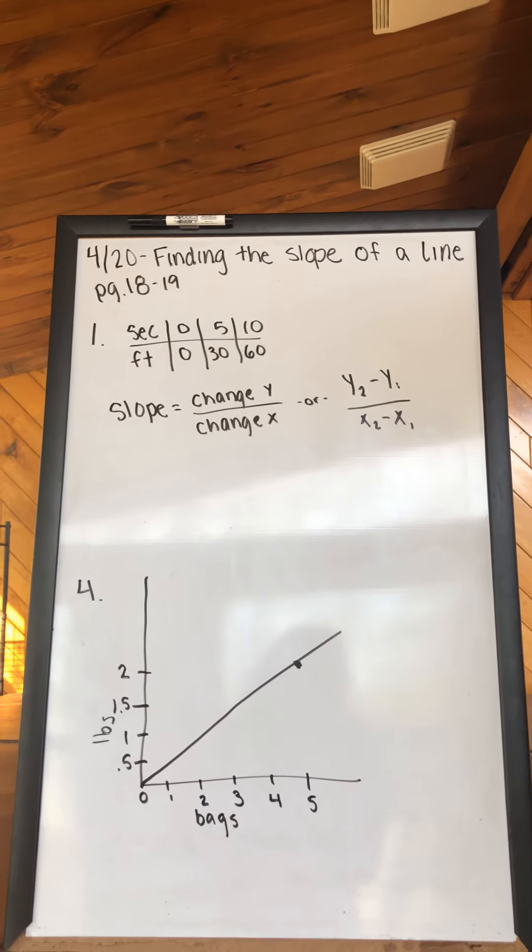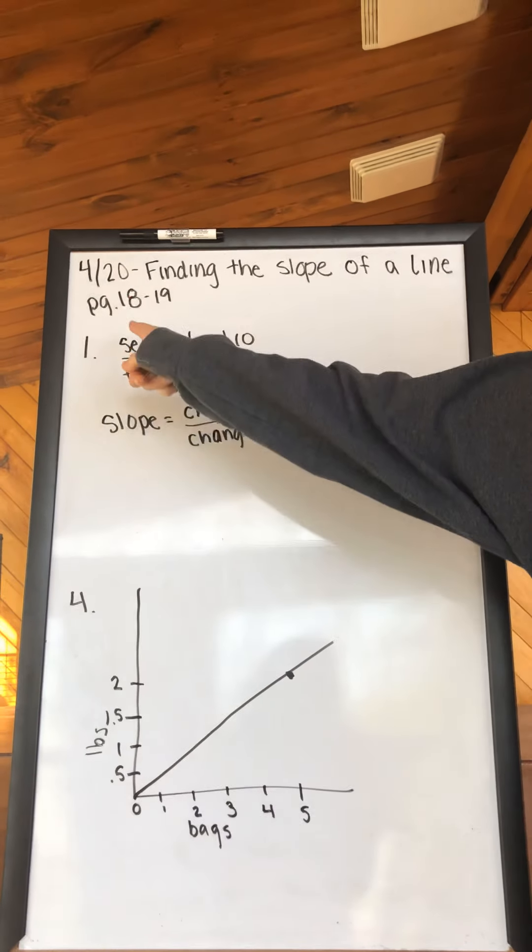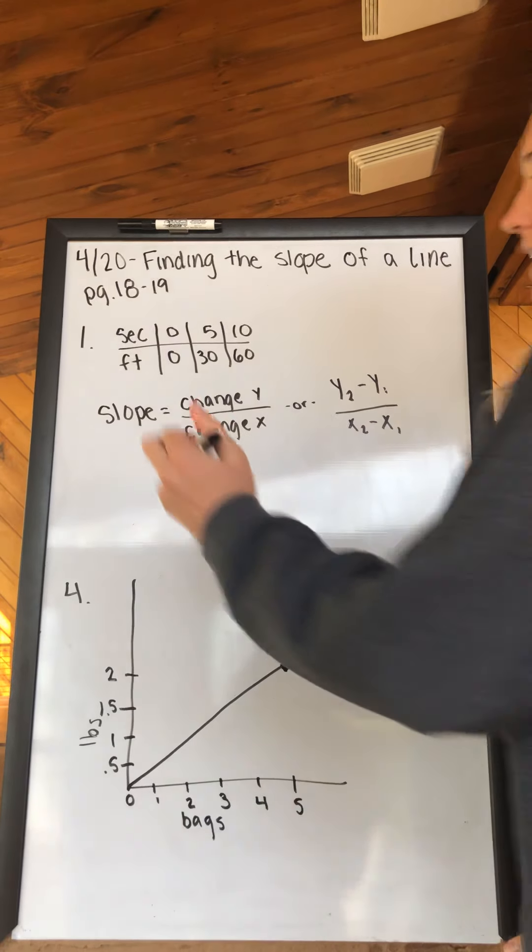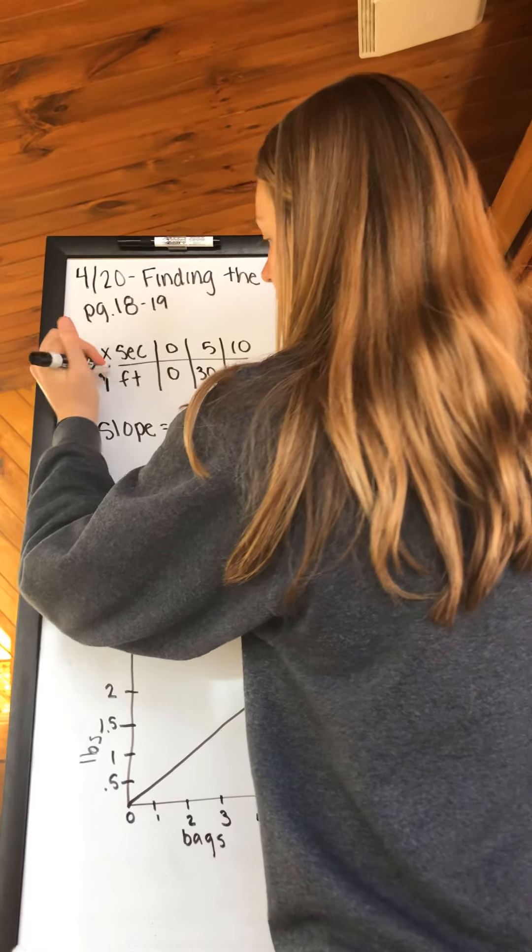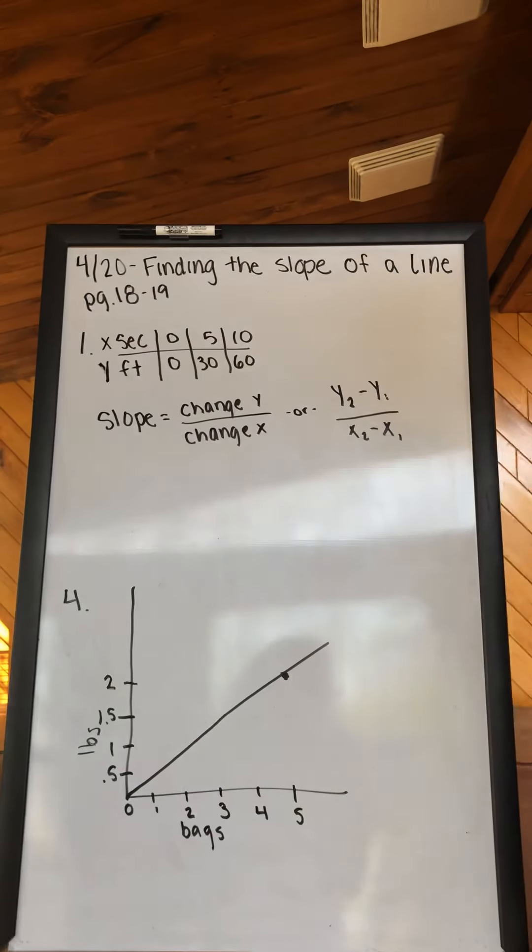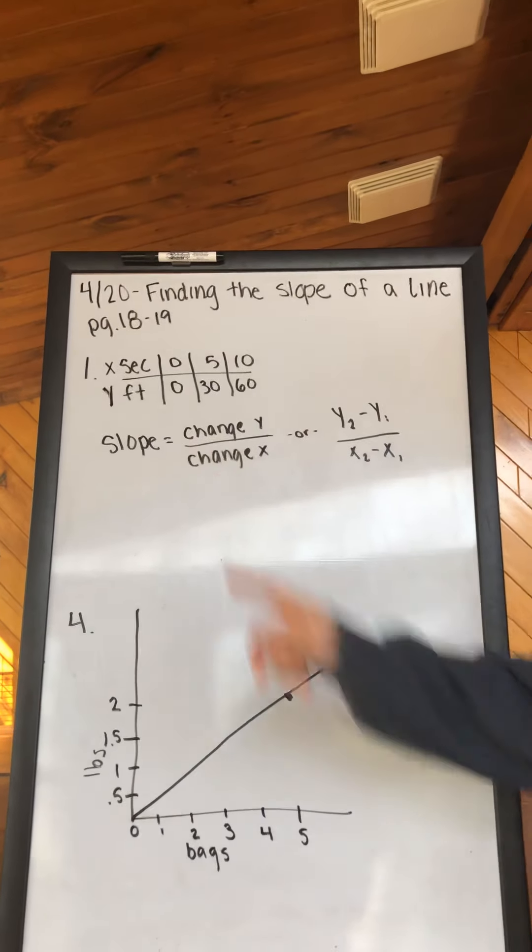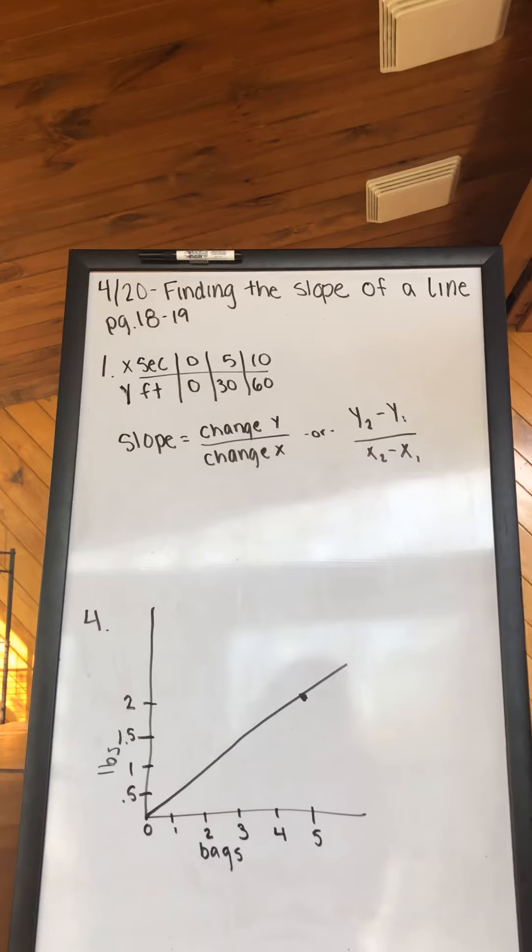Let's look at number 1. We are given a table. Our table is seconds and feet. Seconds is going to be x and feet will be y. Given a table to find the slope, there are two ways to do it.